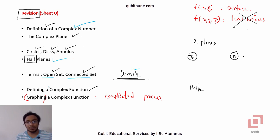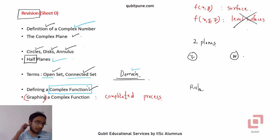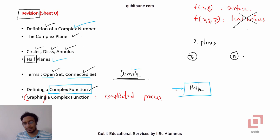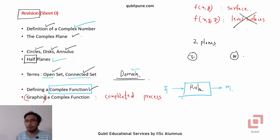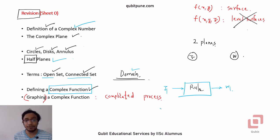Then we defined a complex function in a way similar to how we define a real variable function — you may treat it as a rule which takes in a complex number and spits out another complex number. We also saw what the complex exponential function is, what complex sine and cosine functions are, what the complex logarithmic function is, and we have also seen hyperbolic sine and hyperbolic cosine functions.